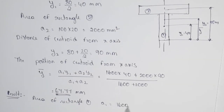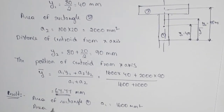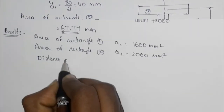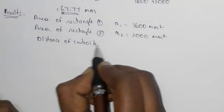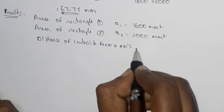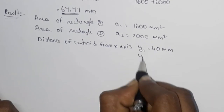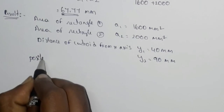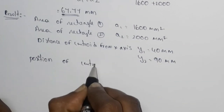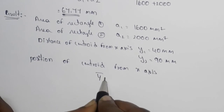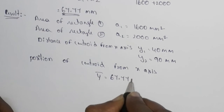A1 equal to 1600 mm square. Area of rectangle 2, A2 equal to 2000 mm square. Next, distance of centroid from x-axis: y1 equal to 40 mm, y2 equal to 90 mm. Position of centroid from x-axis: ȳ equal to 67.77 mm.